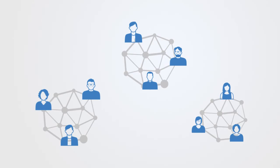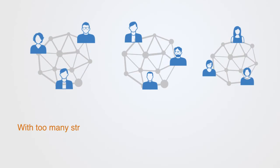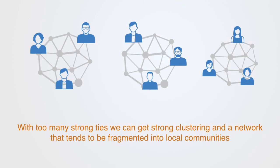Evidence suggests that in most real-world networks, and in particular social networks, nodes tend to create tightly knit groups characterized by a relatively high density of ties and clustering. These closely knit clustered communities can maintain their diversity in the face of homogeneity within the larger network. With too many strong ties we can get strong clustering and a network that tends to be fragmented into local communities — these clumpy networks will have longer average path length, and these clusters can slow the even flow across the network.